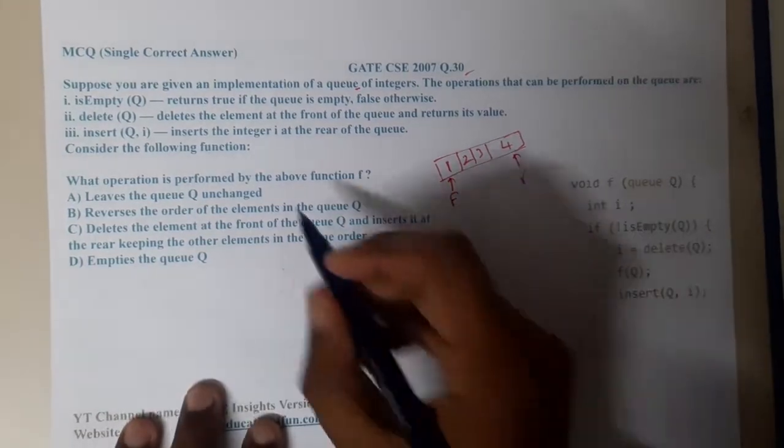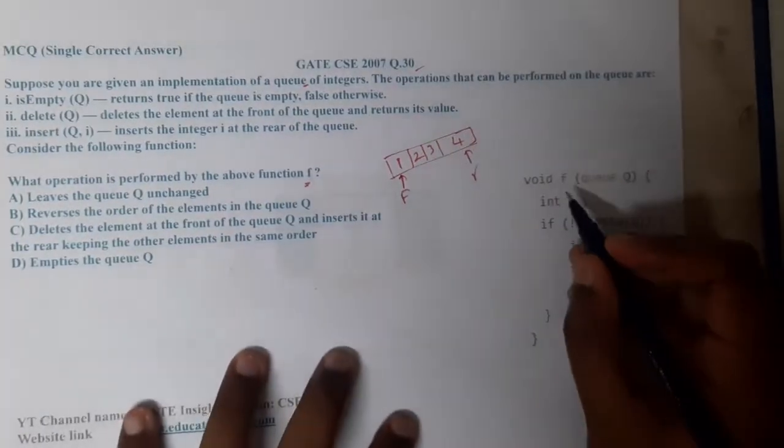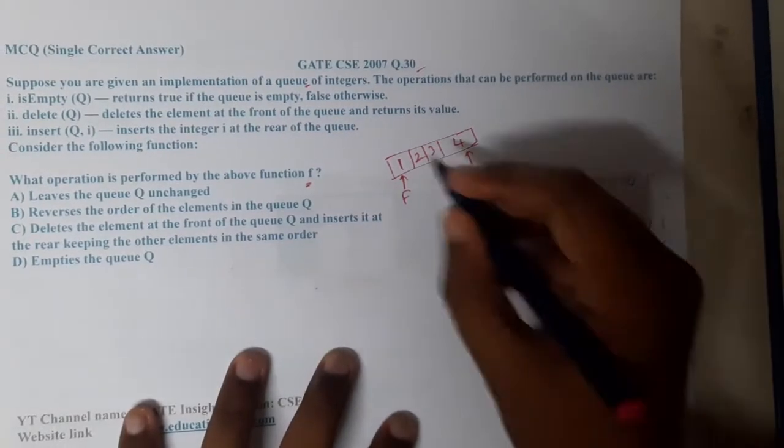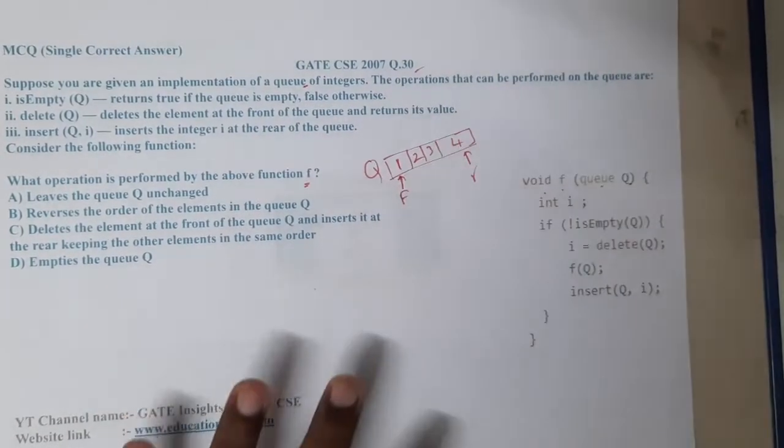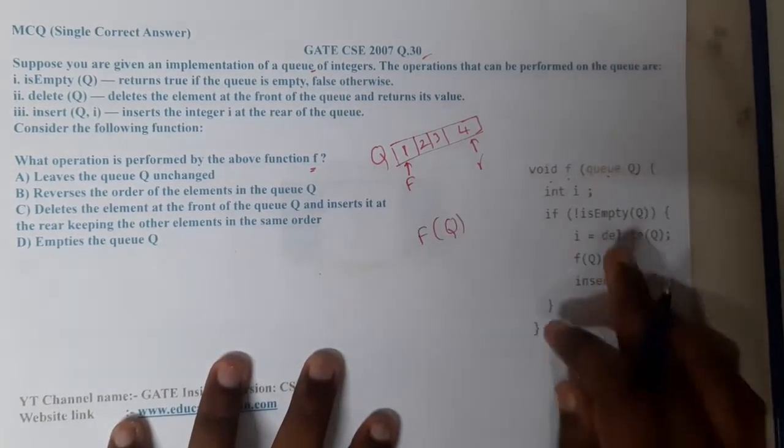They gave a code and are asking what exactly the code does, what it performs. So while F Q, assume that this is our queue. The function F is called with queue Q.